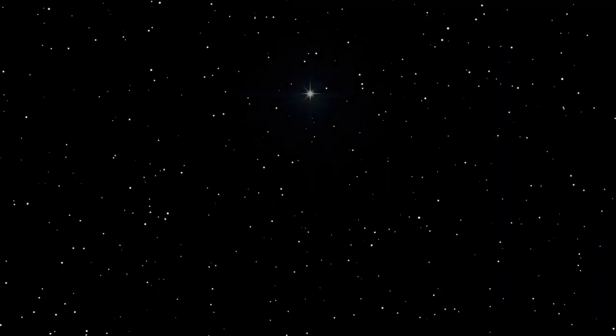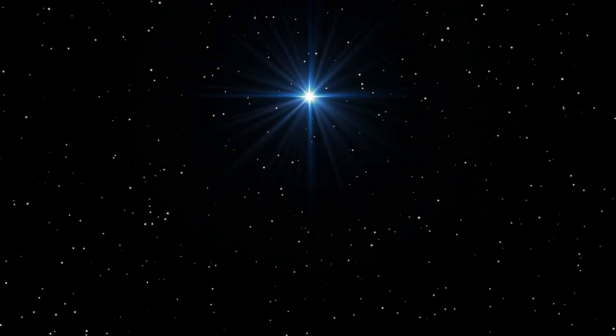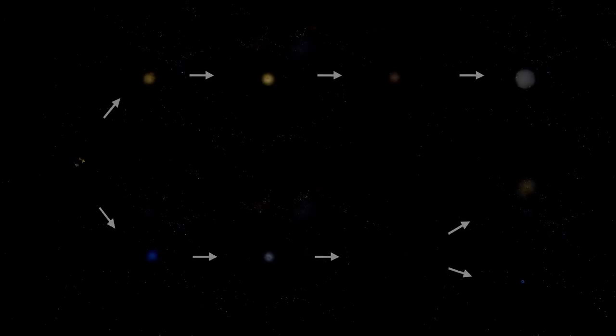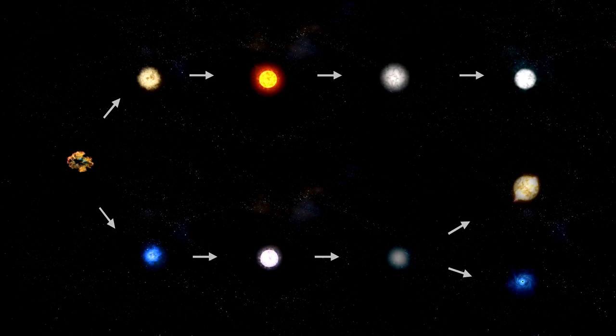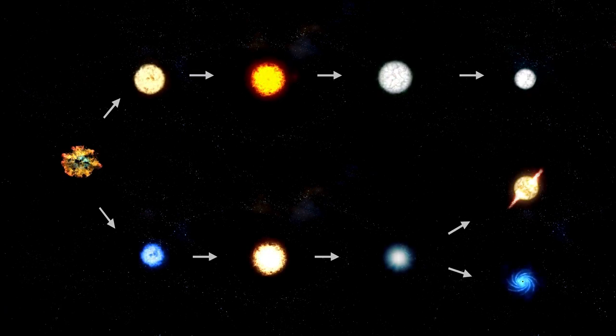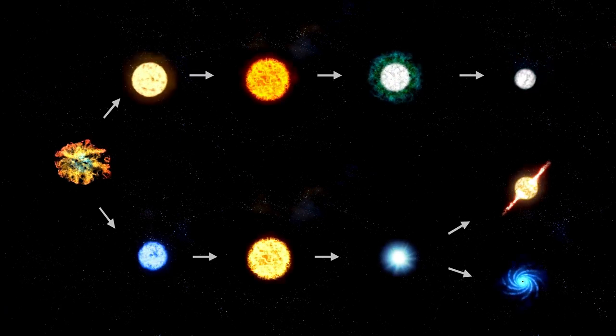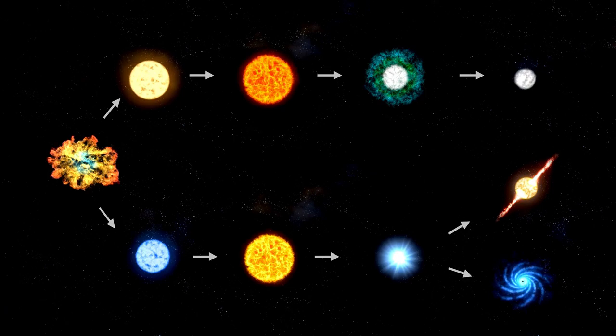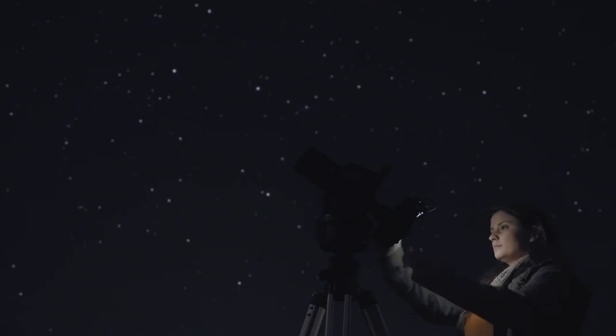However, the scarcity of light from Betelgeuse is not only due to the distance that separates us from it. Betelgeuse is what is known as a pulsating red supergiant, which means that it is an ancient, massive star that undergoes expansions and contractions. During these cycles, its brightness can vary in the night sky.